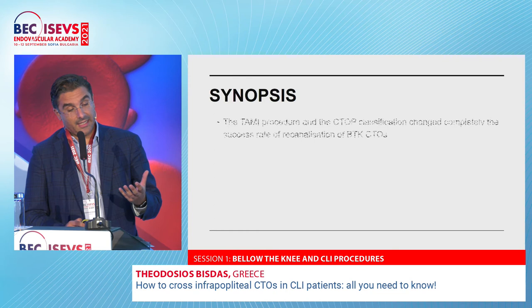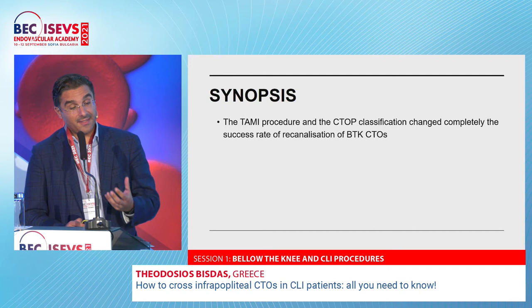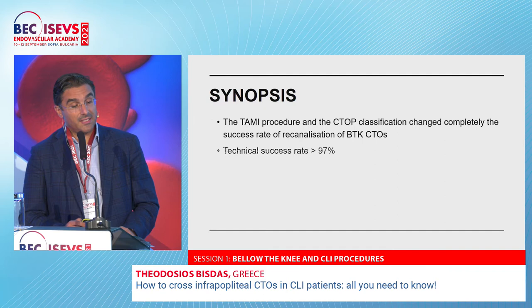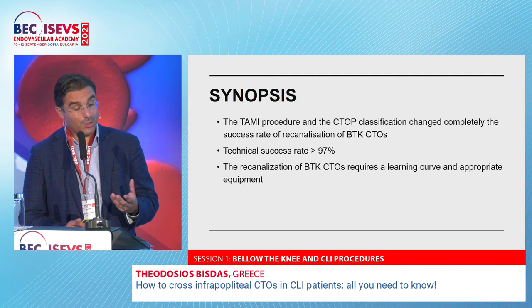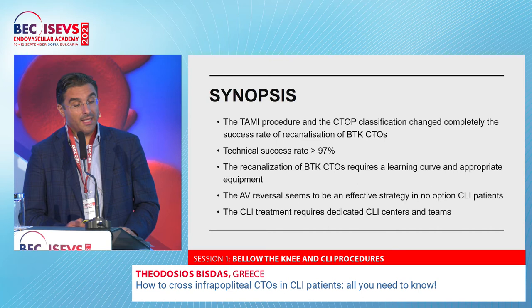In summary: the TAMI procedure — transpedal access — and the CTOP classification have completely changed the success rate of below-the-knee CTO recanalization. Technical success rates are around 97% when using transpedal access. Recanalization of BTK CTOs requires a learning curve and appropriate equipment. AV reversal appears to be an effective strategy in no-option CLI patients. CLI treatment belongs to dedicated CLI centers and teams.